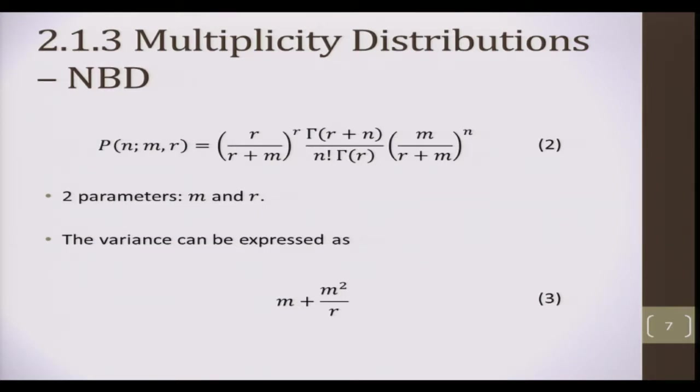It has two parameters, mean multiplicity and k, the dispersion parameter. The NBD can be obtained from the Poisson distribution. The variance, as you can see from equation 3, looks something like this. In the limit where k is large, you obtain the mean and variance are equal, recovering the Poisson case.